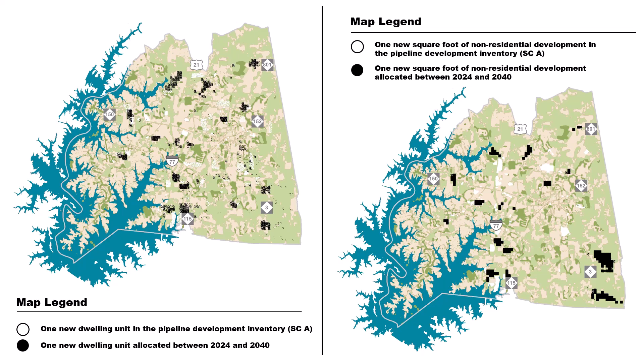The amount of land disturbed by new development — residential and non-residential combined — for Scenario C is 10.6% of the total planning area, which represents an area approximately 22 times larger than downtown Mooresville.